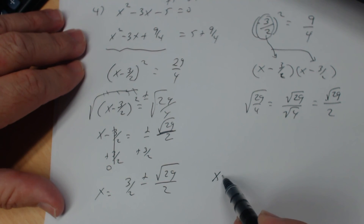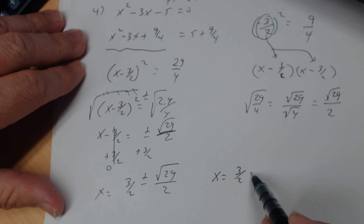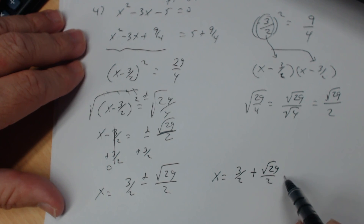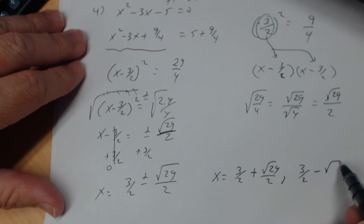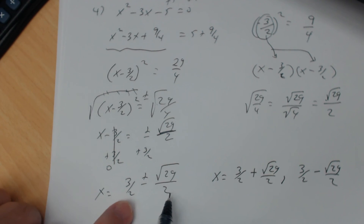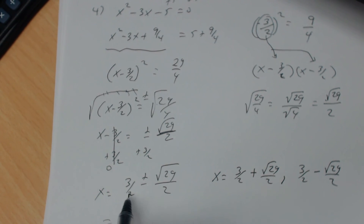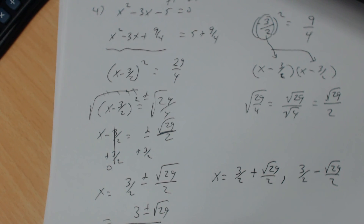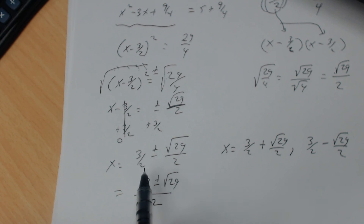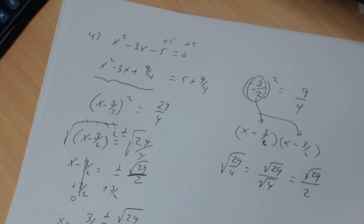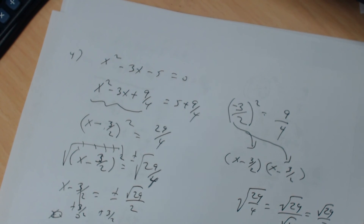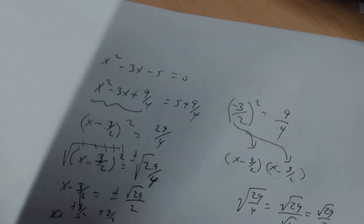On MyMathLab: x = 3/2 + √29/2, 3/2 − √29/2. Since the denominators are the same, you can also write this as one fraction: x = (3 ± √29) / 2. That takes care of the completing the square portion of the class.